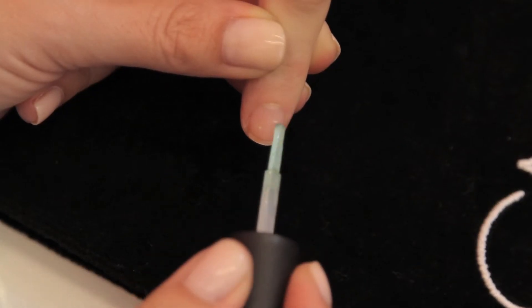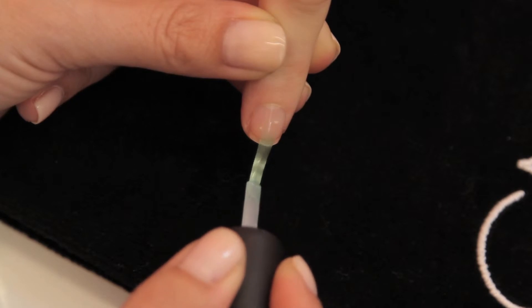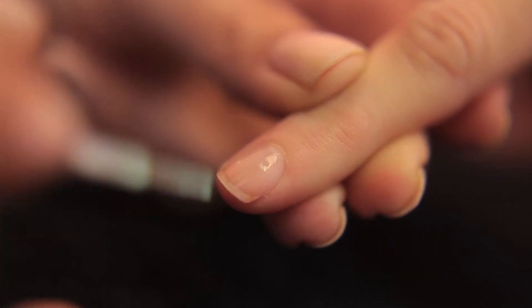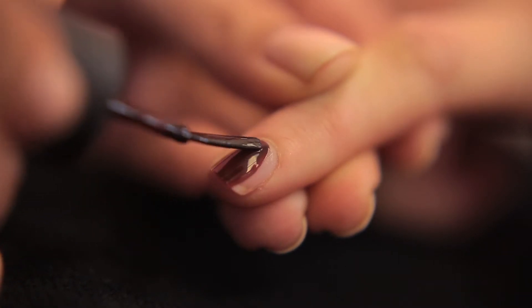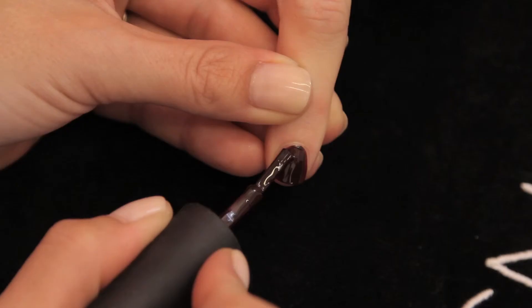Now, for this finger, we're going to switch it up with a jewel tone color combination. Again, apply the base coat. Follow with one coat of Raisin in the Sun, a beautiful rich burgundy.